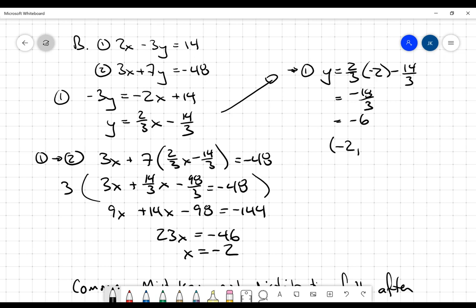So my point that I think is the solution is the point negative 2 comma negative 6. Remember, I got that by plugging those values into equation one, so I'm going to check it by going back into equation two. That'll be 3 times negative 2 plus 7 times negative 6. Does that equal negative 48? The answer is negative 6 minus 42 equals negative 48. Yes. Left side equals right side. That works.